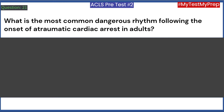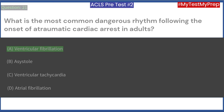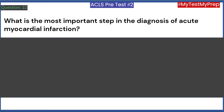What is the most common dangerous rhythm following the onset of atraumatic cardiac arrest in adults? A. Ventricular fibrillation. B. Asystole. C. Ventricular tachycardia. D. Atrial fibrillation. Answer: A. Ventricular fibrillation.